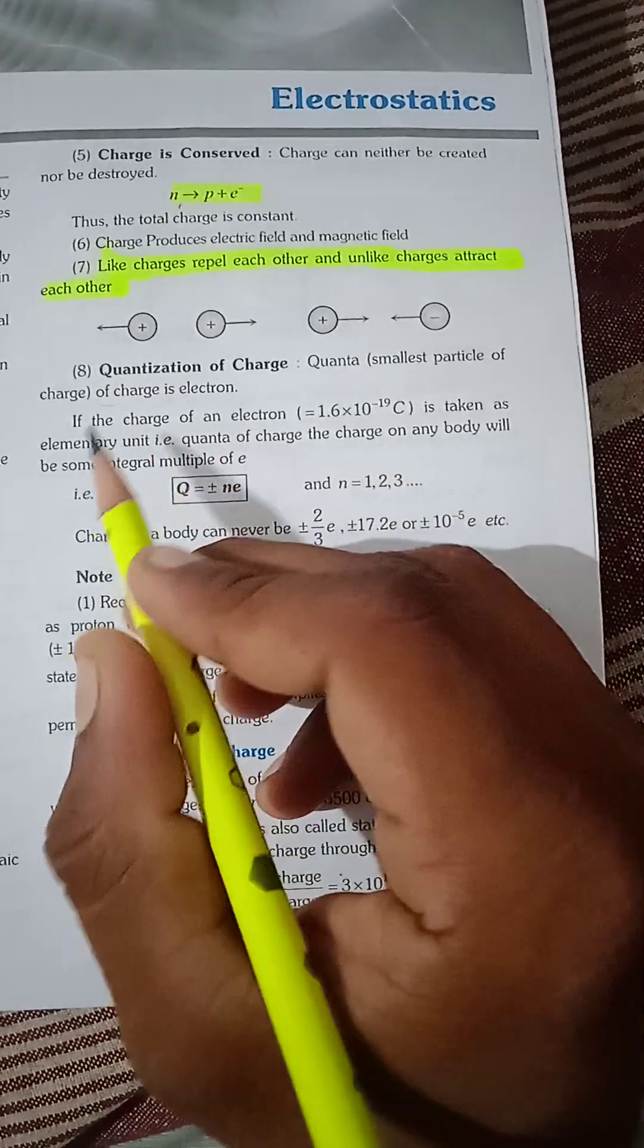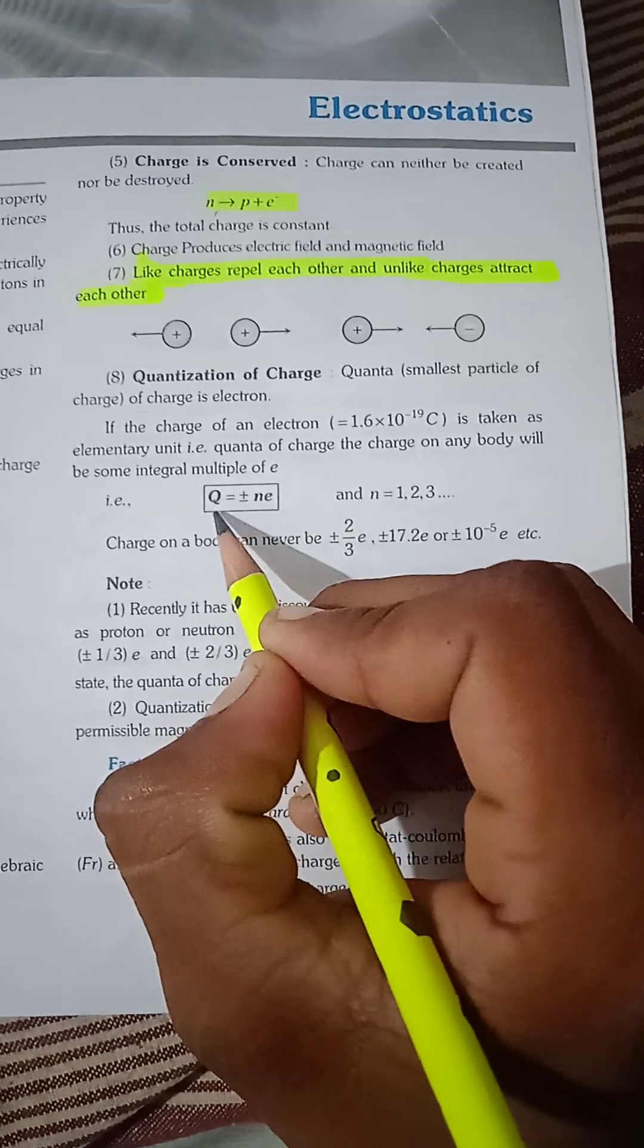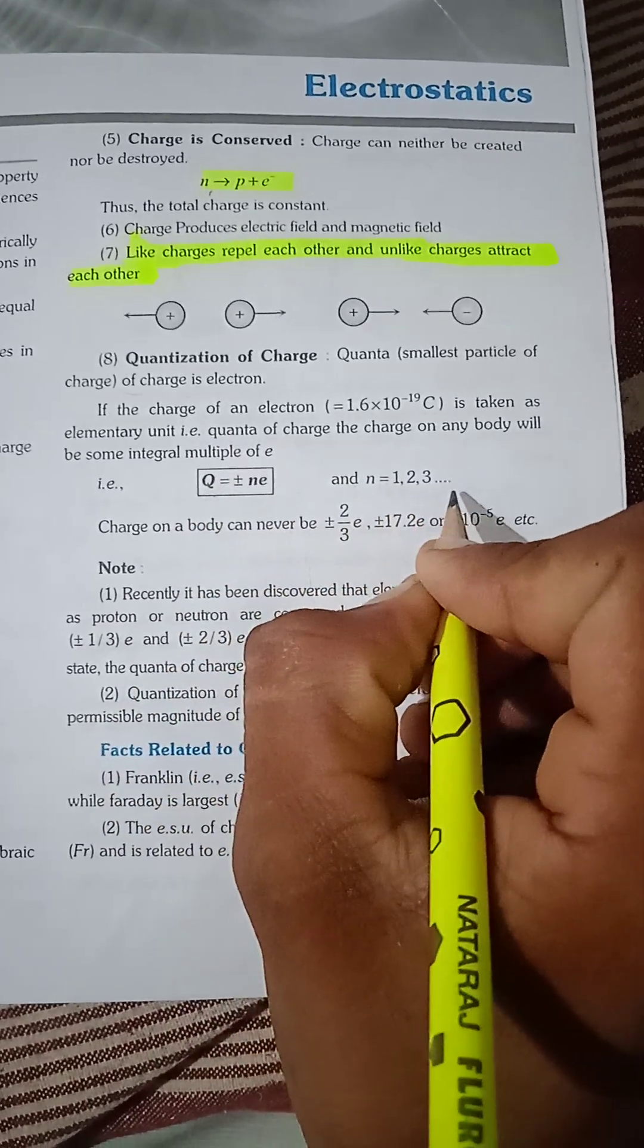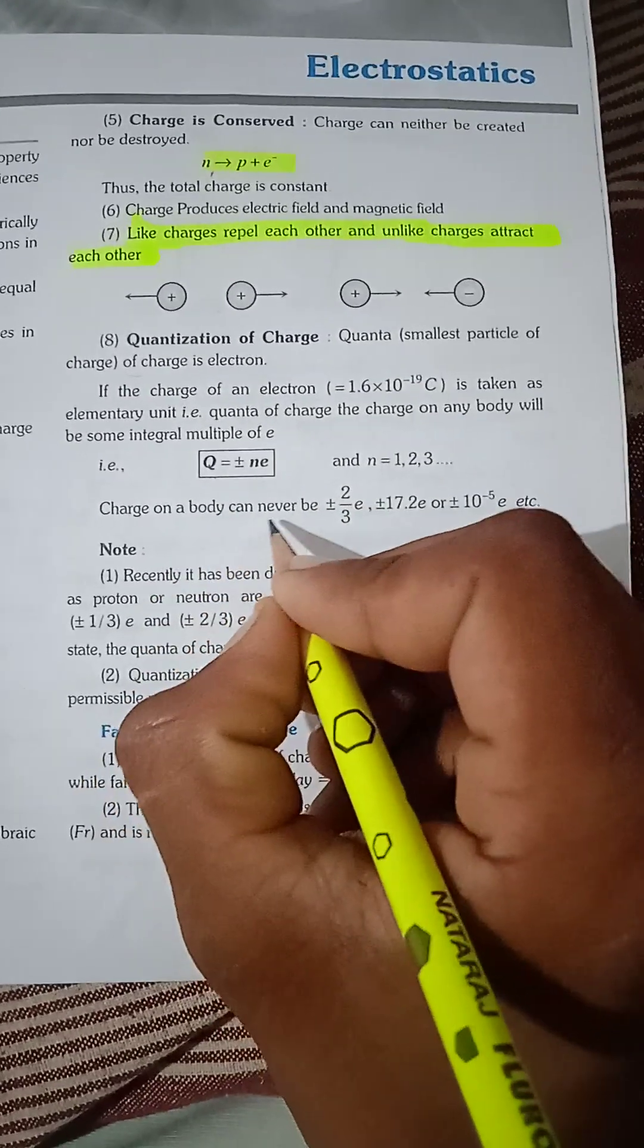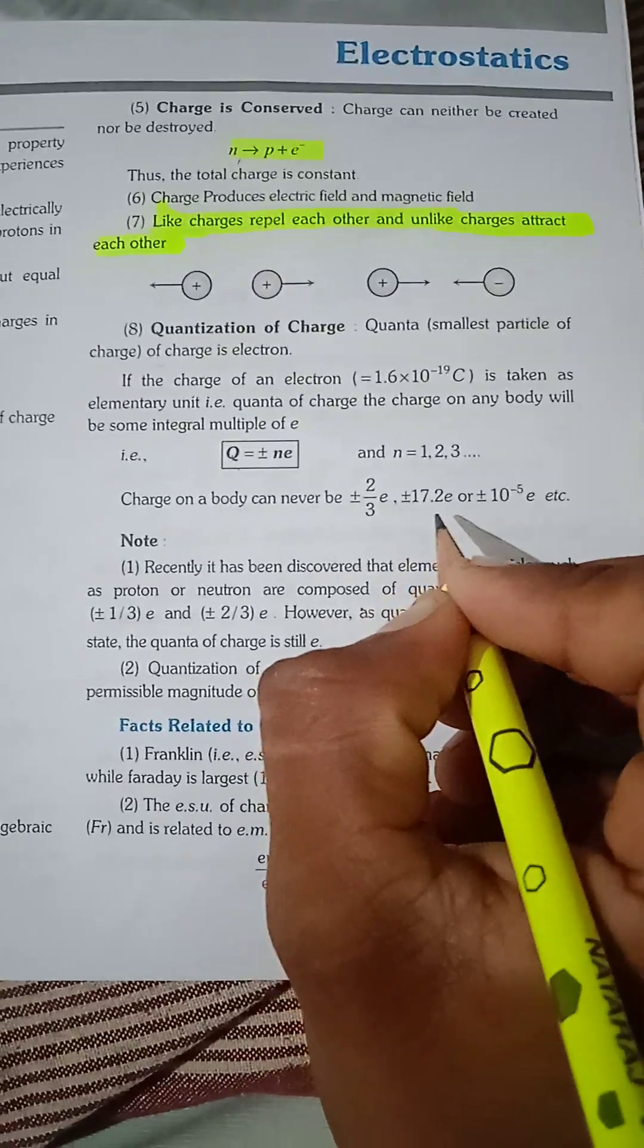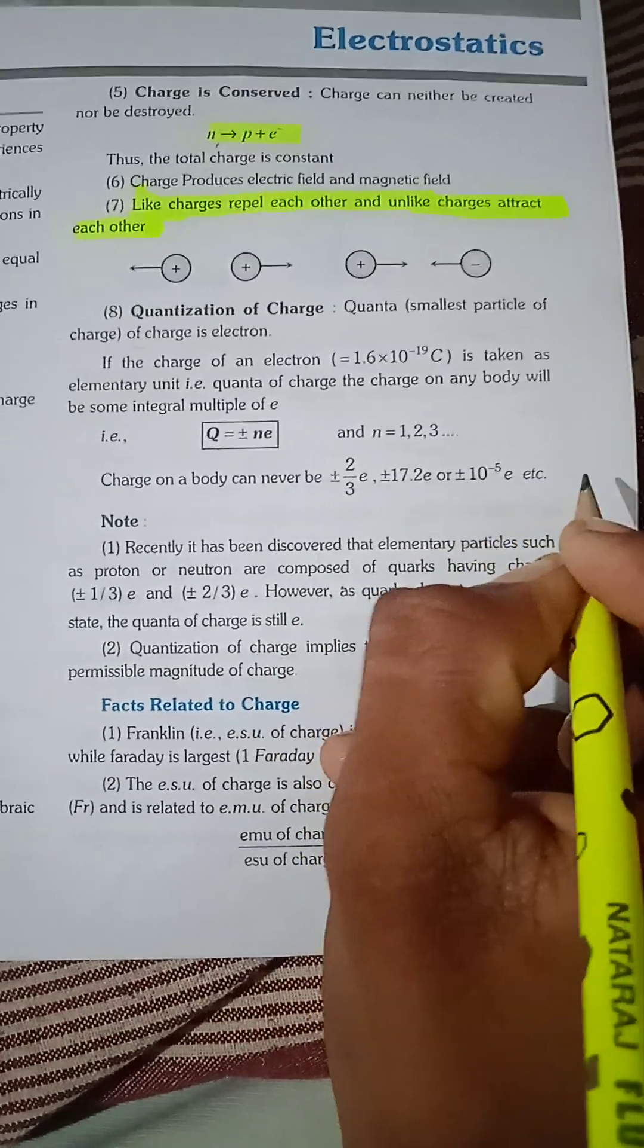Charge on any body will be some integral multiple of e. So Q equals n times e, where n equals 1, 2, 3. Charge on a body can never be plus/minus 2 by 3 e, or plus/minus 17.2 e, or 2 root 5 e, etc.